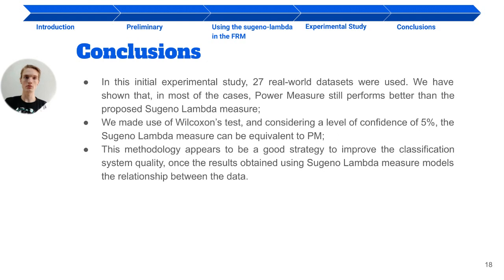To corroborate our findings, we made use of Wilcoxon tests, supporting that power measure achieves a superior rank. Notwithstanding, considering a level of confidence of 5%, the Sugeno lambda measure can be equivalent to PM. We highlight that this methodology appears to be a good strategy to improve the classification system quality, once the results obtained using Sugeno lambda measure models the relationship between the data, while the power measure does not allow that.